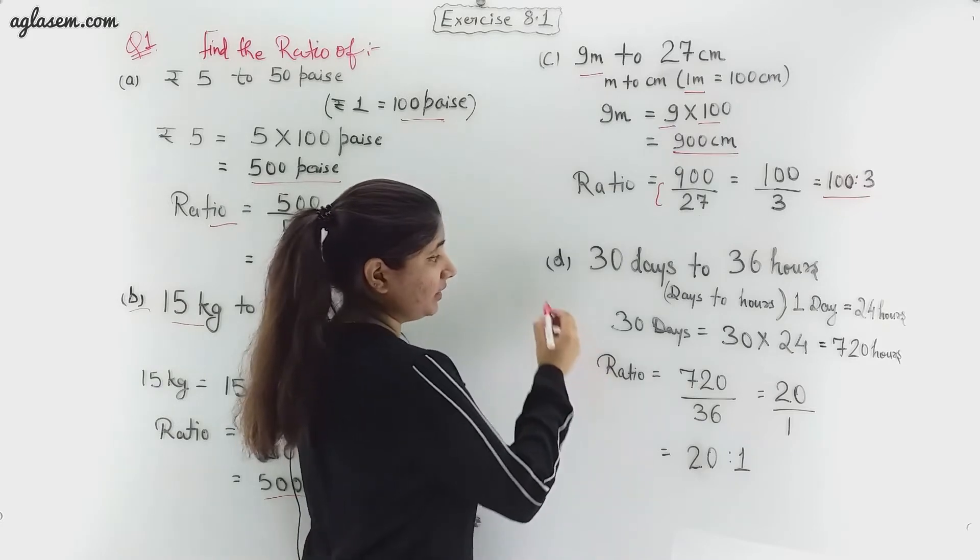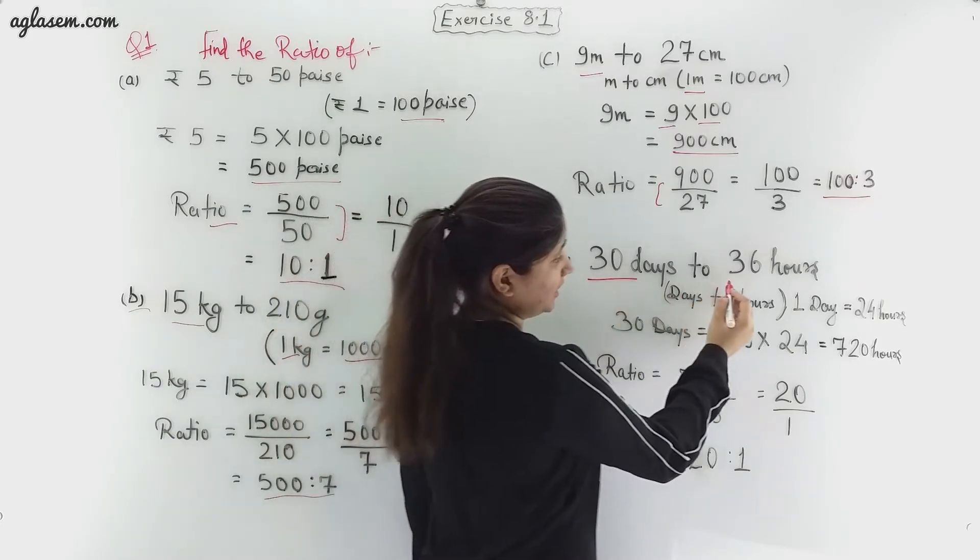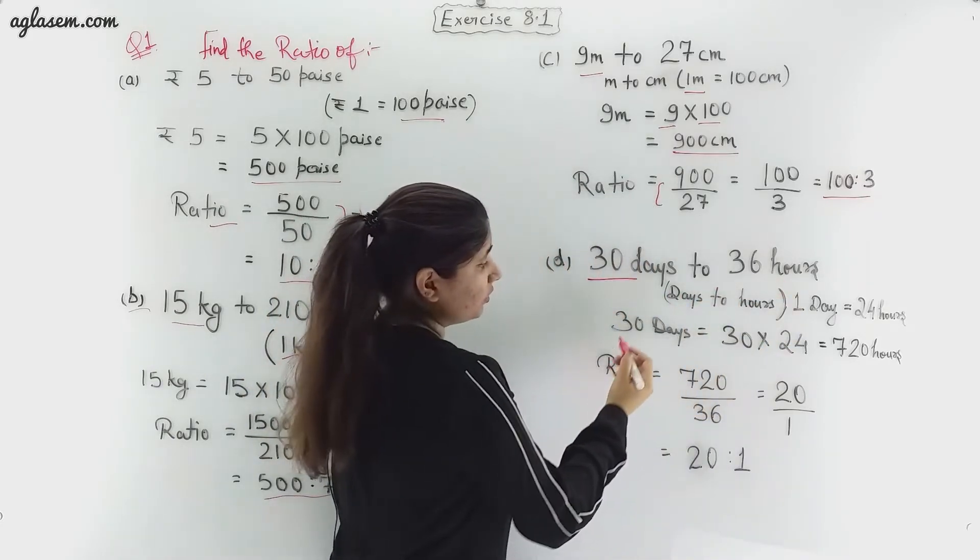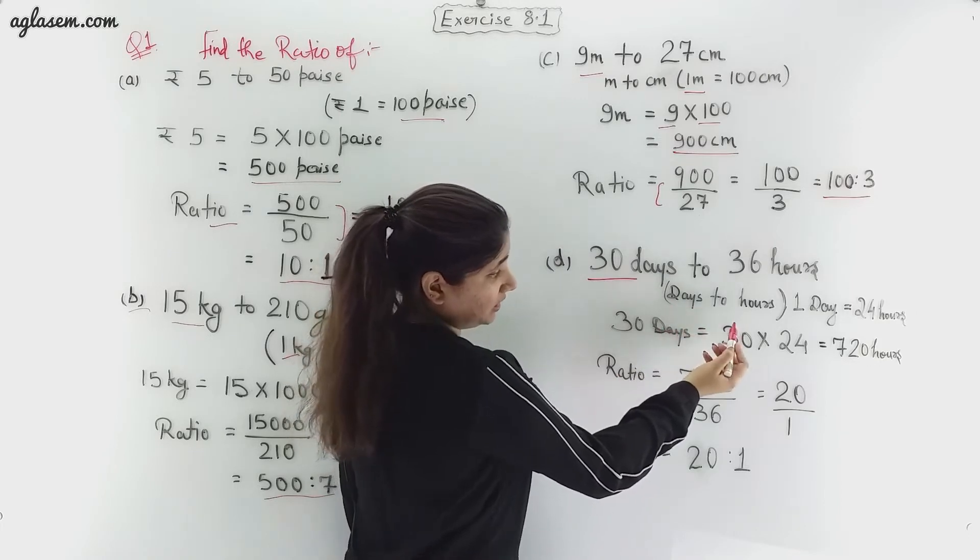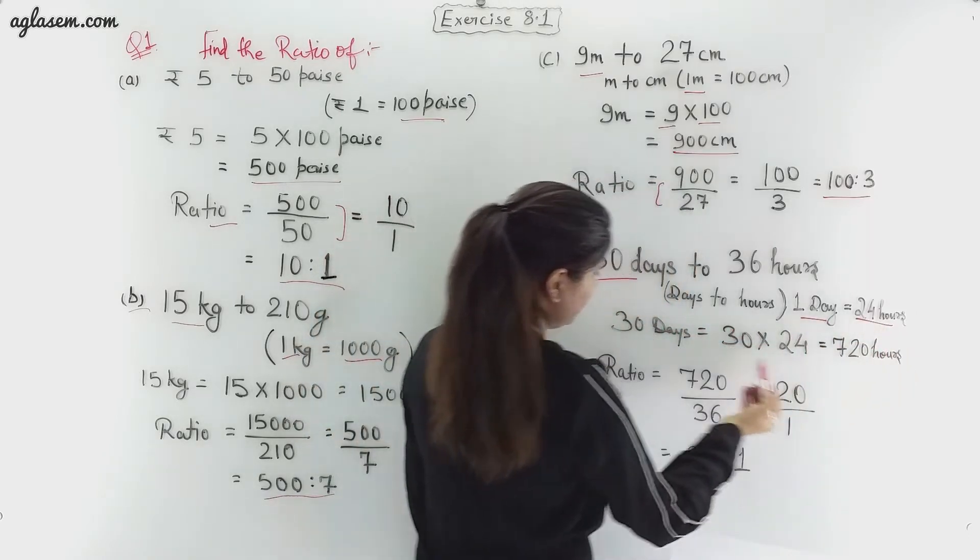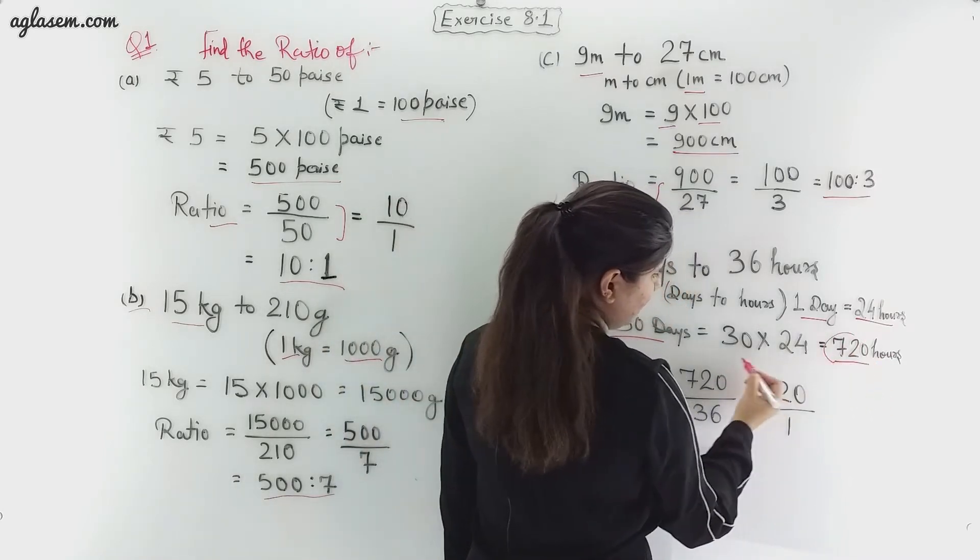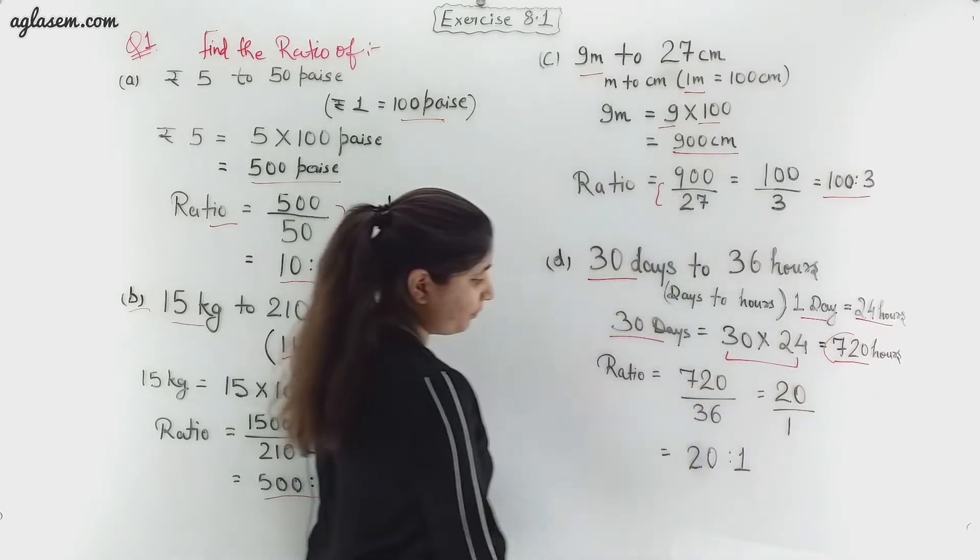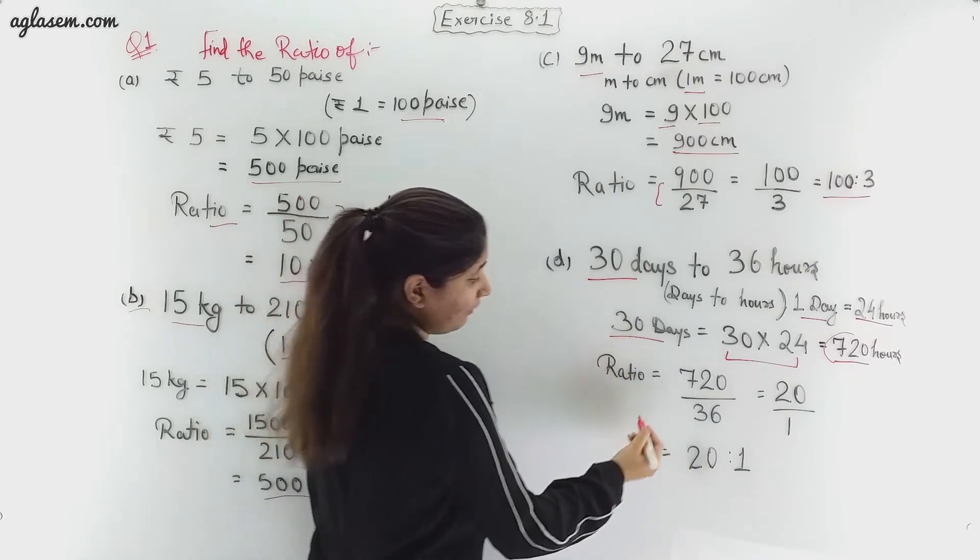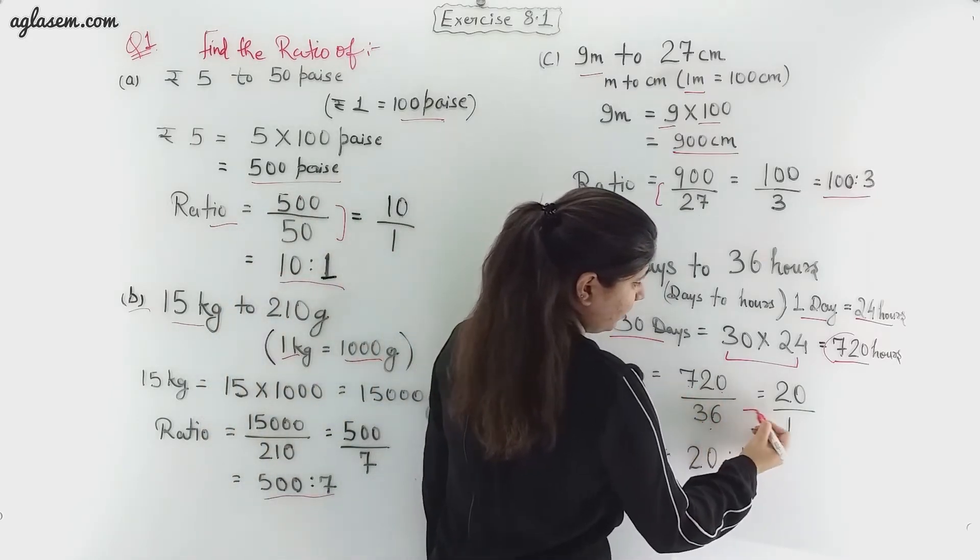Now let's come to part (d). Here we have to find the ratio of 30 days to 36 hours. So we have to convert days to hours. One day is equal to 24 hours, so 30 days is equal to 720 hours. We get this answer by multiplying 30 into 24. To find the ratio we have to divide 720 by 36. Here we get 20 ratio 1 as an answer.